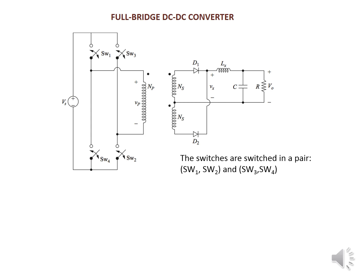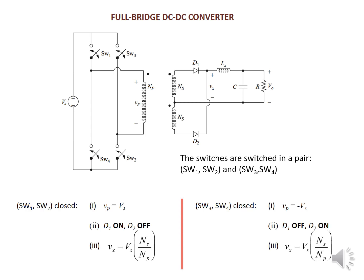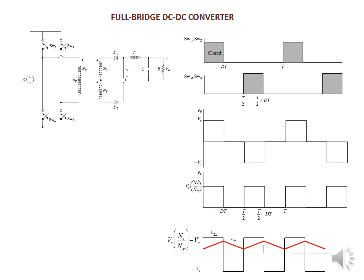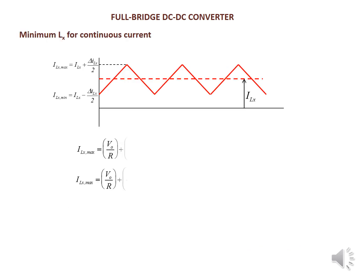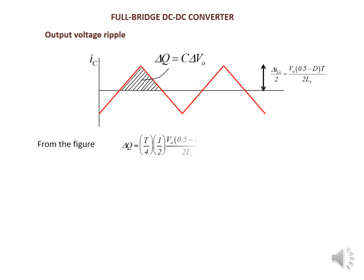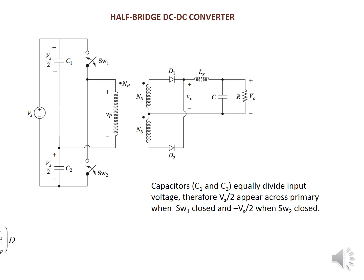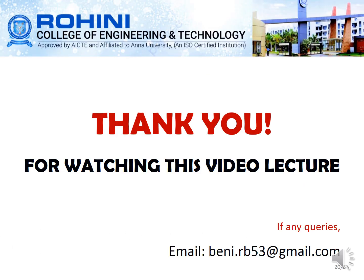For the full-bridge DC converter, the same analysis applies, but here switching is done in two parts: SW1, SW2, SW3, and SW4. When SW1 and SW2 close, D1 is on and D2 is off; when SW3 closes, D1 is off and D2 is on. From this full-wave rectifier configuration, the closed and open terminal derivation of the output voltage is found, and the minimum and maximum currents along the axes are calculated.